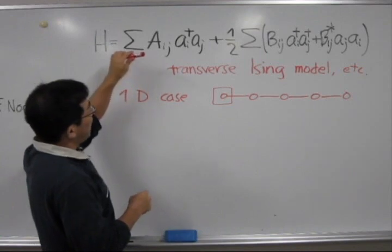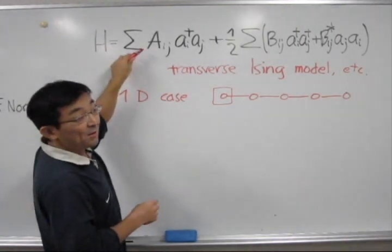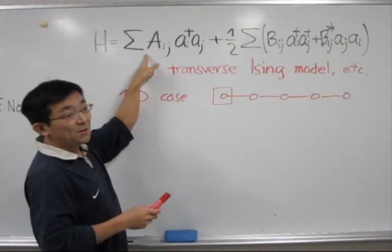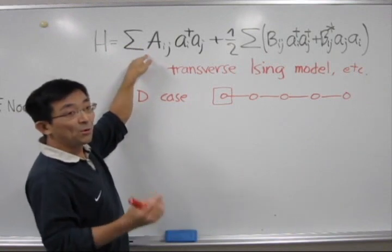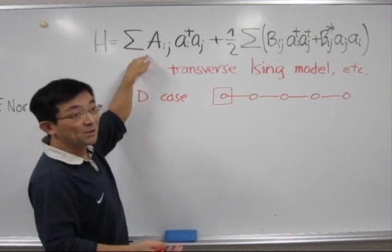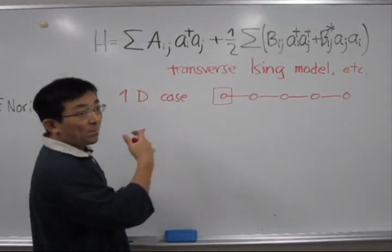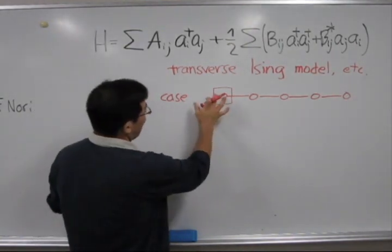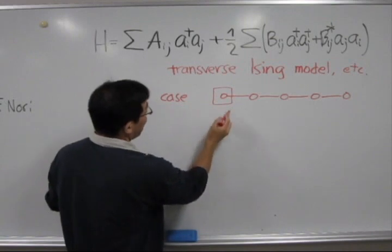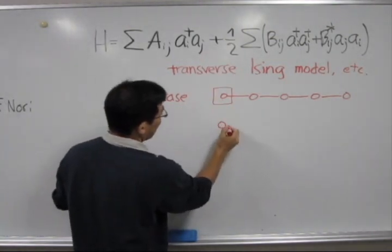The nice thing about this Hamiltonian is it can be diagonalized by utilizing the Bogoliubov transformation. By using it, this graph of this Hamiltonian can be mapped